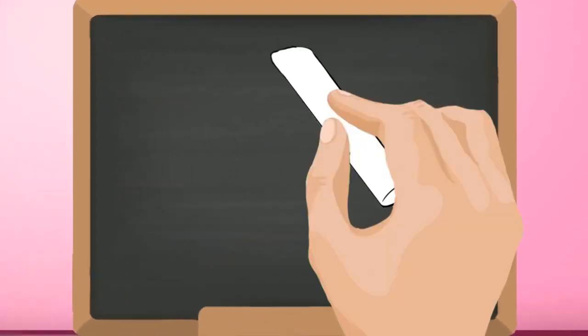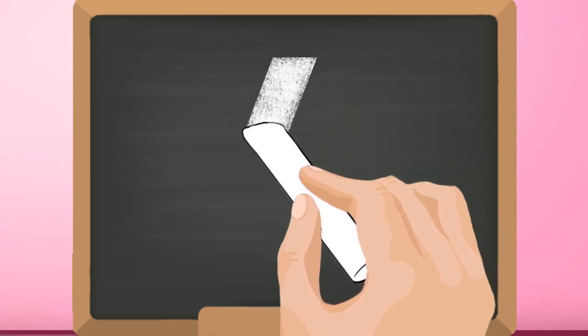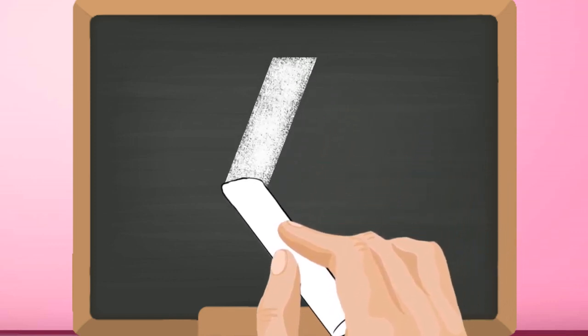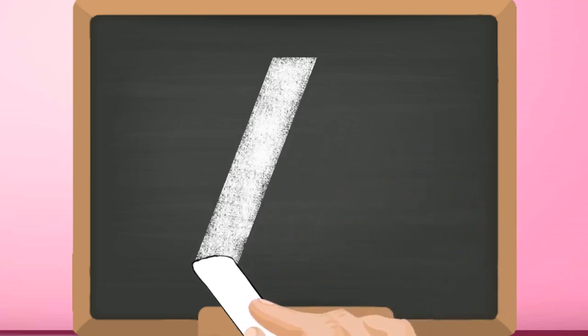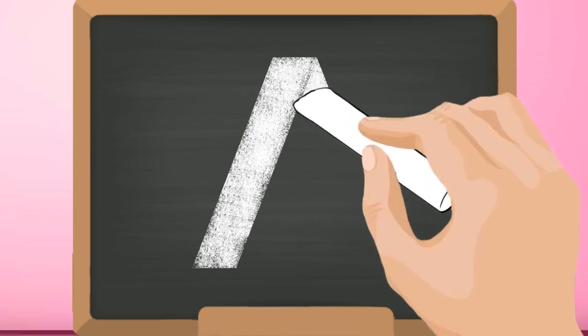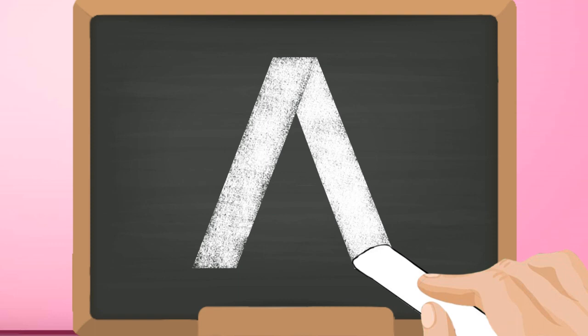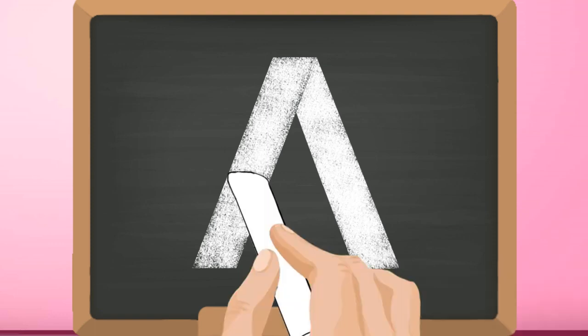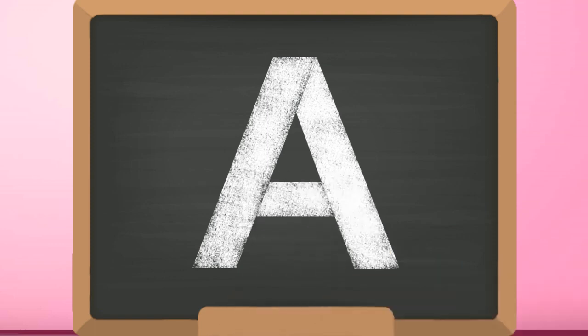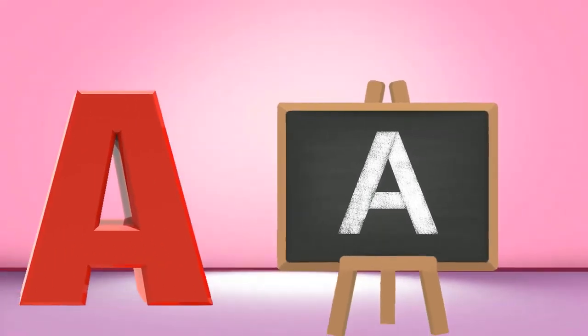Start from the top and draw a slanting line downwards. Go to the top and draw another slanting line down to the opposite side. Now go a little below the middle and draw a slanting line — the cross. Capital A.